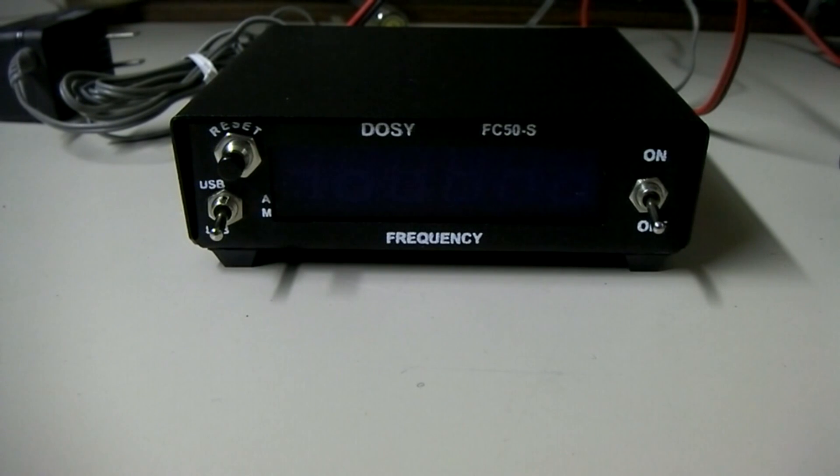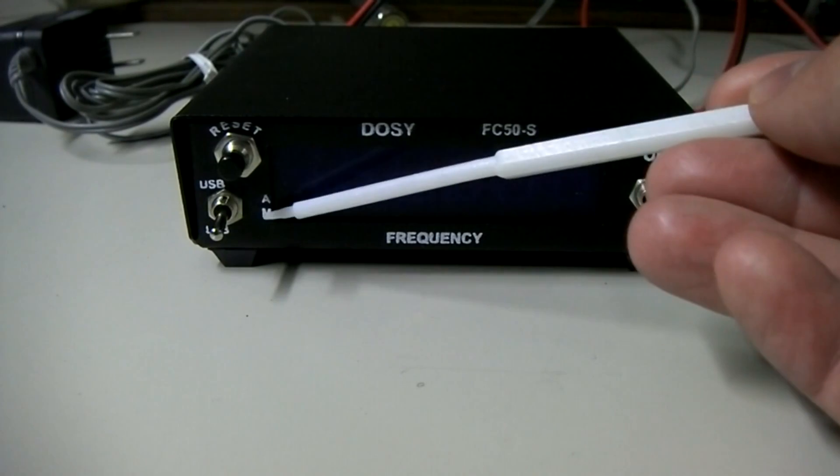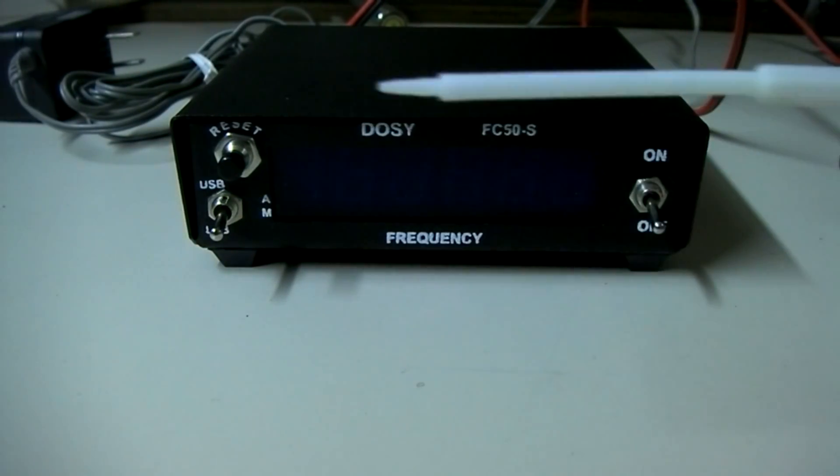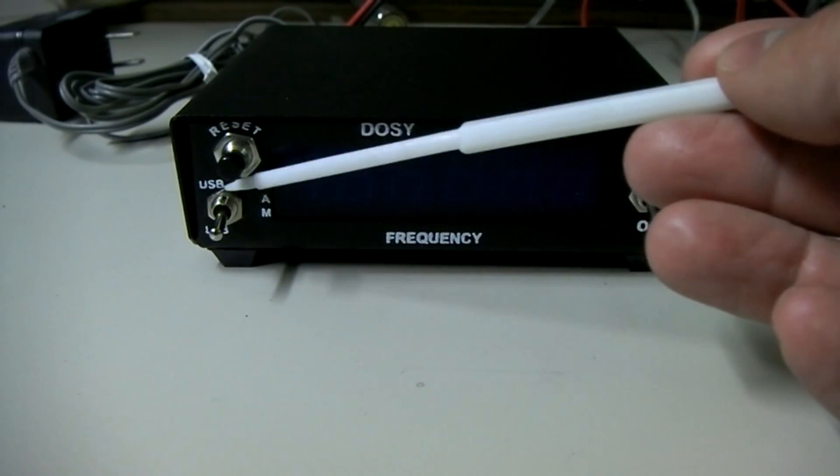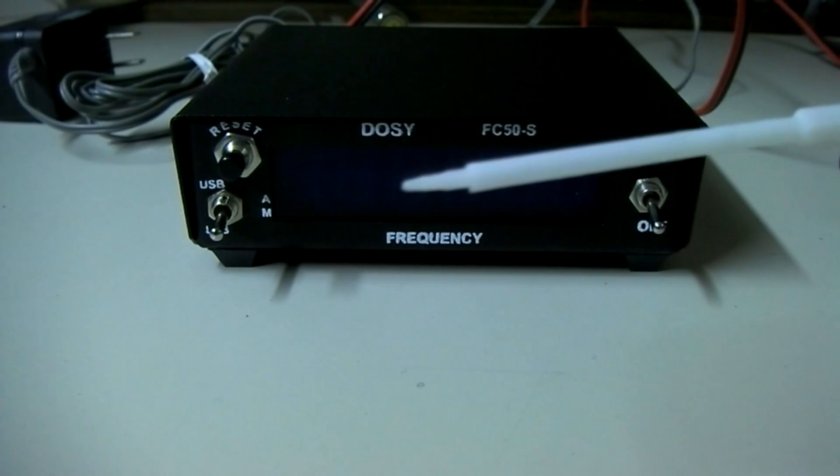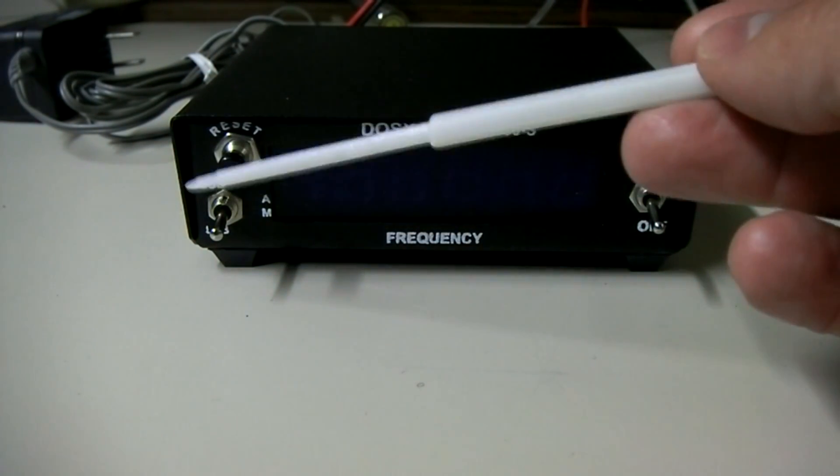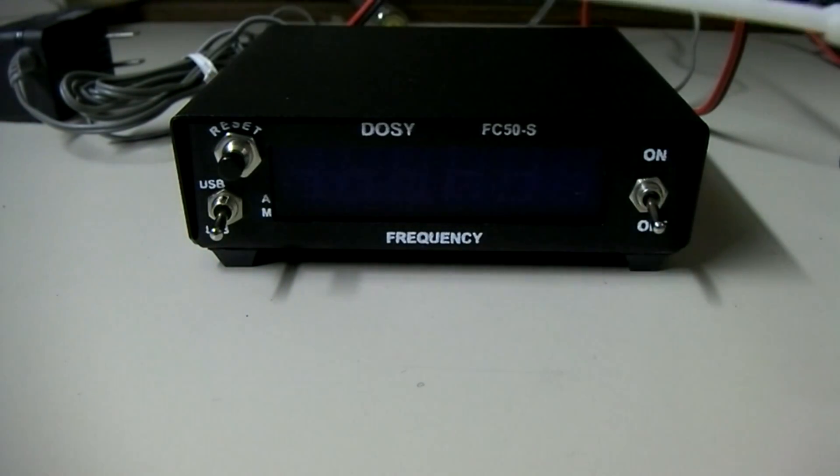So this is a neat new counter from Dozey. On-off switch over here. It'll display your frequency here. There's a reset button, which I'll show you how to use during the actual operation video. There's an AM, lower sideband, upper sideband positioning. So you actually will need to push the switch in the direction that you're operating, and we will show you how this works in the operation part of the video.